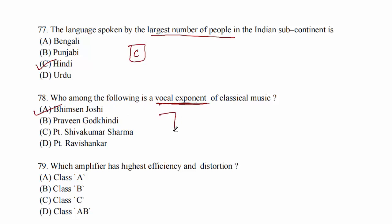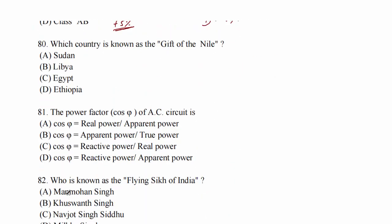Question 79: which amplifier has the highest efficiency and distortion? Class A has 50% efficiency, Class B has greater than 50% but distortion is high. Class C has around 90% efficiency. Class AB has roughly 75 to 78% efficiency. Class D has 100% efficiency, but the highest efficiency with distortion is Class C. Option C.